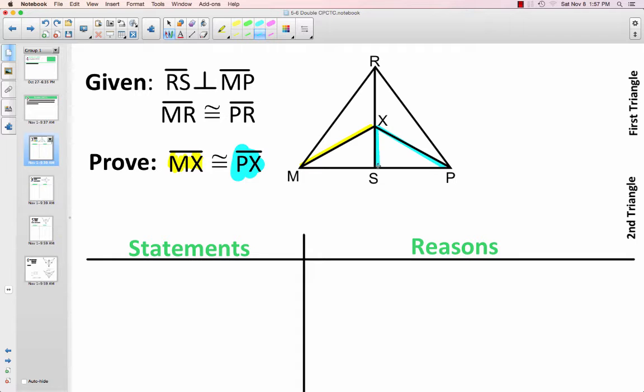So it might be a good idea to actually figure out which triangles we might need to prove congruent. PX is contained in triangle PSX and MX is contained in triangle MSX, so right here. So eventually we are going to need to prove those two triangles congruent, though we might not be able to right away.